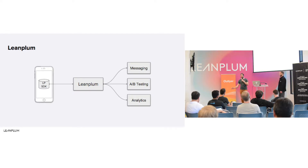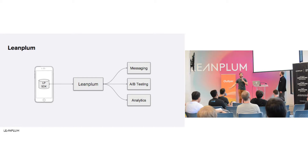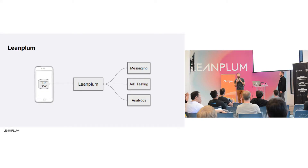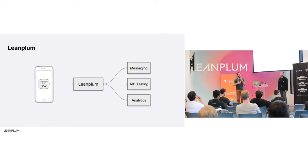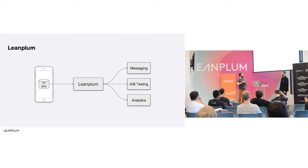This is our product in a nutshell. We provide our clients with an SDK that you instrument in your app, and then we start tracking a whole bunch of metrics — user behavior, events. We ingest them in our system, and based on those we can provide our customers with personalized messaging, A/B testing, and analytics.